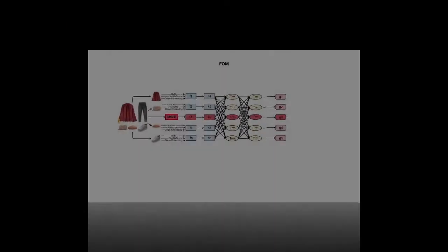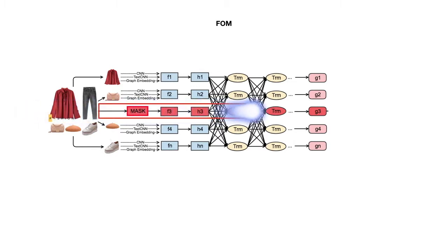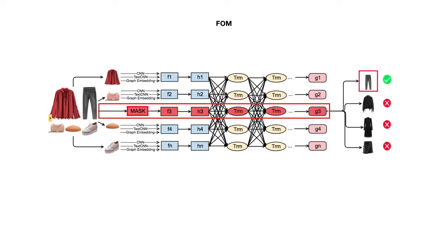To capture the item interactions in an outfit, we design a masked item prediction task based on a bidirectional transformer encoder architecture. We name the model Foam. Masking items one at a time in outfits, we require the model to fill in the blank with the correct item according to the context.